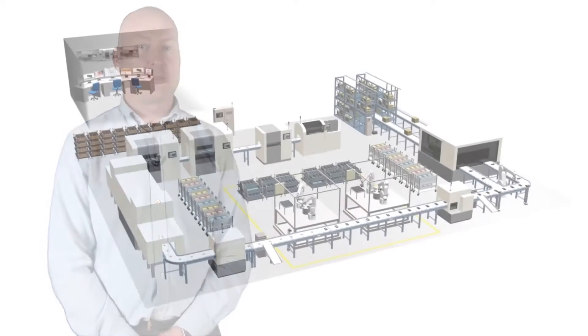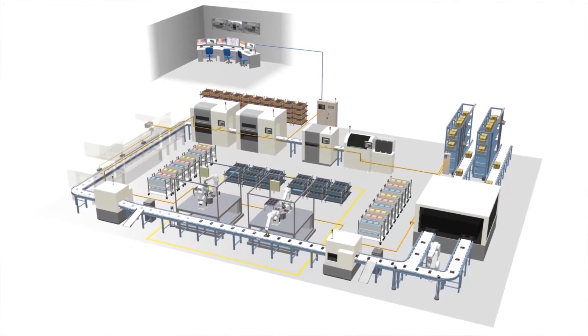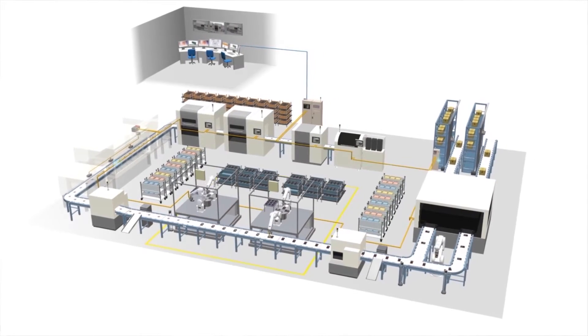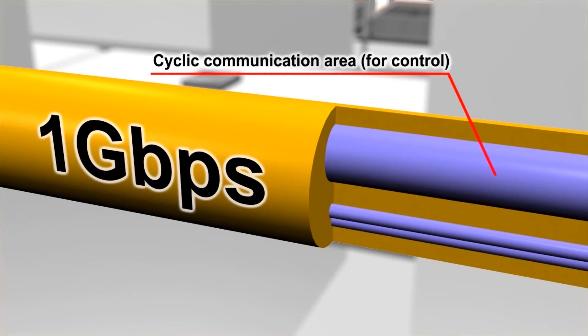The controller has an area of memory which is shared with all the devices on the network. To communicate with a given device, you simply change the data in the area of memory which corresponds to that device. The network automatically updates the data across the network without any need for programming.